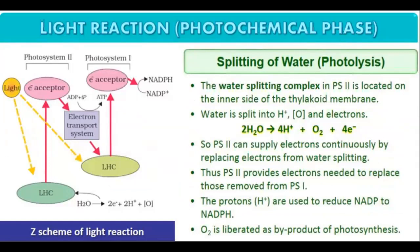Now comes the light reaction, which is the photochemical phase. Photo means light, chemical means reaction — so the light reaction part is known as the photochemical phase. The first step is the splitting of water. Splitting of water is known as photolysis, as the splitting is taking place in the presence of sunlight. The water splitting complex in PS2 is located on the inner side of the thylakoid membrane.